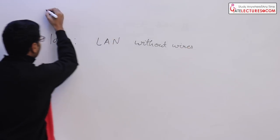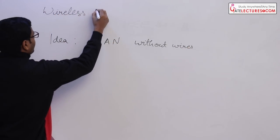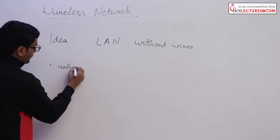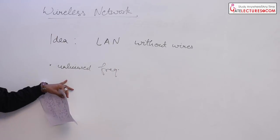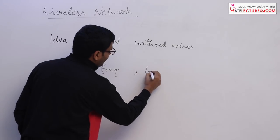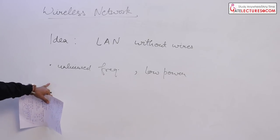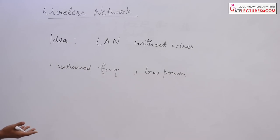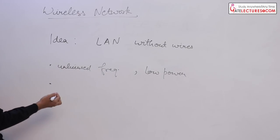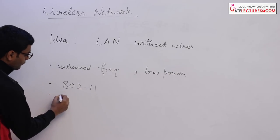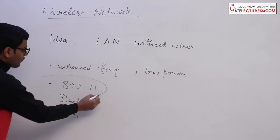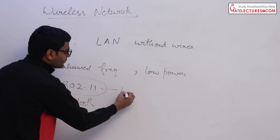In wireless networks we usually use unlicensed frequency of the ISM band and low power. This is to provide services cheaply and to more people. Unlicensed frequencies are available for free in the ISM band, so Wi-Fi services become cheap. Low power means we can provide services to a greater number of people. There are various techniques in wireless networks — 802.11, Bluetooth, UWB and so on — but for GATE syllabus we only need to prepare 802.11, whose market name is Wi-Fi.